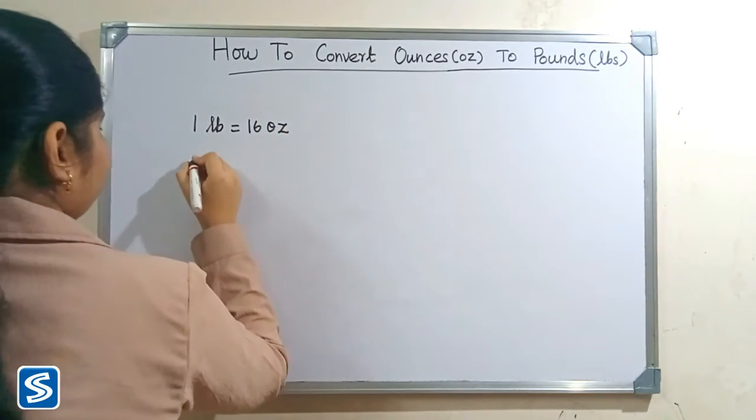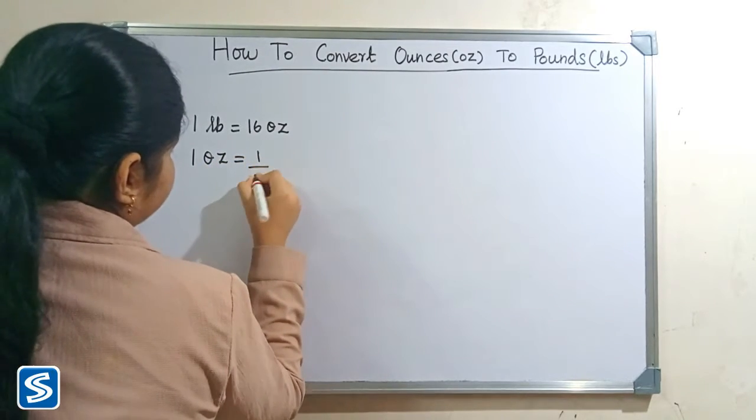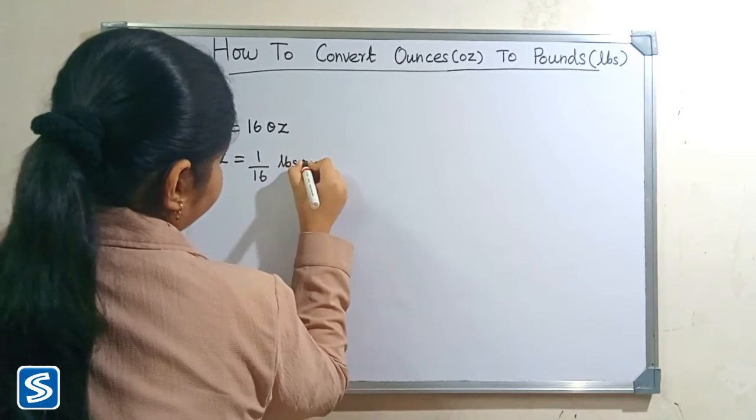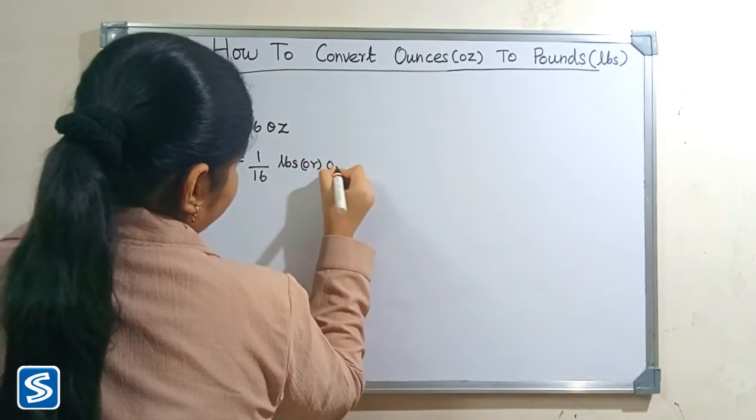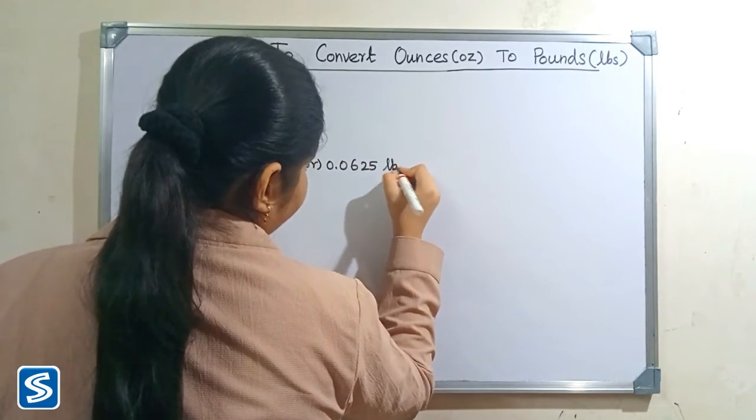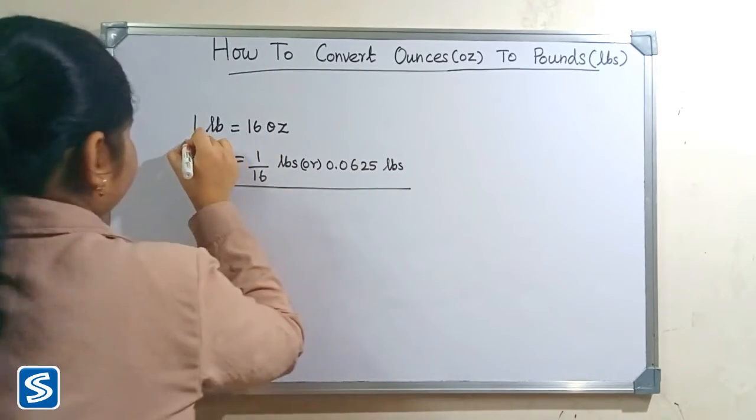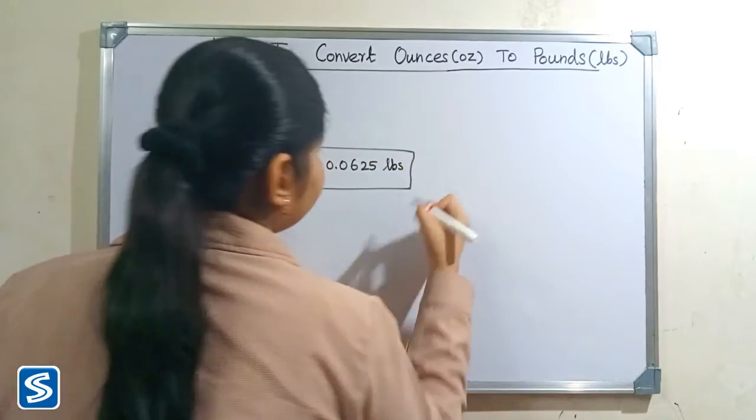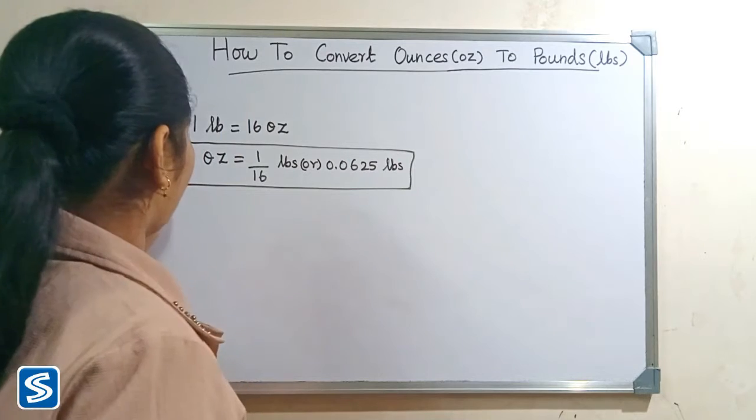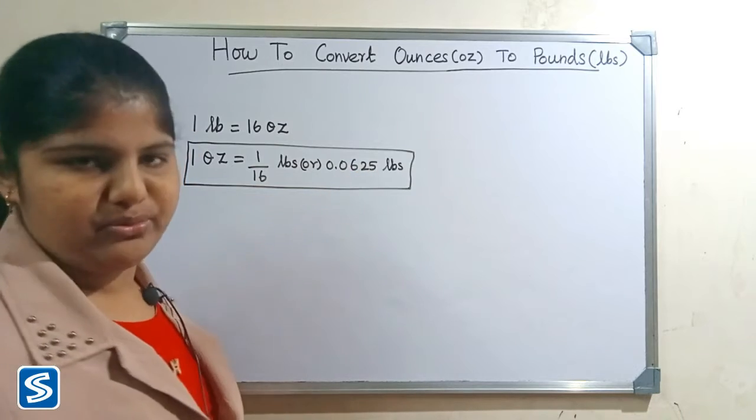So, 1 ounce is equal to 1/16 pounds or 0.0625 pounds. The formula for converting ounces into pounds is: 1 ounce equals 1/16 pounds or 0.0625 pounds.